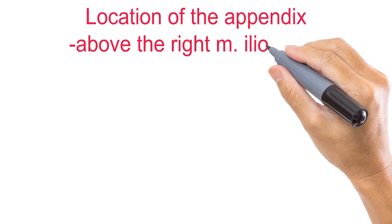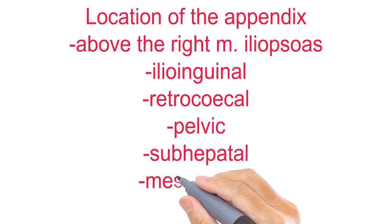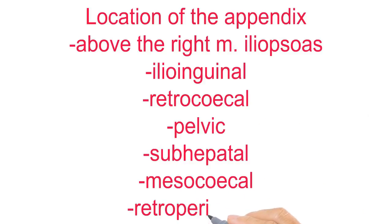The location of the appendix vermiformis is variable. Normal location is above the right iliopsoas muscle, but it can also be found in the ilioinguinal, retrocecal, pelvic, subhepatic, mesocecal, and retroperitoneal regions.